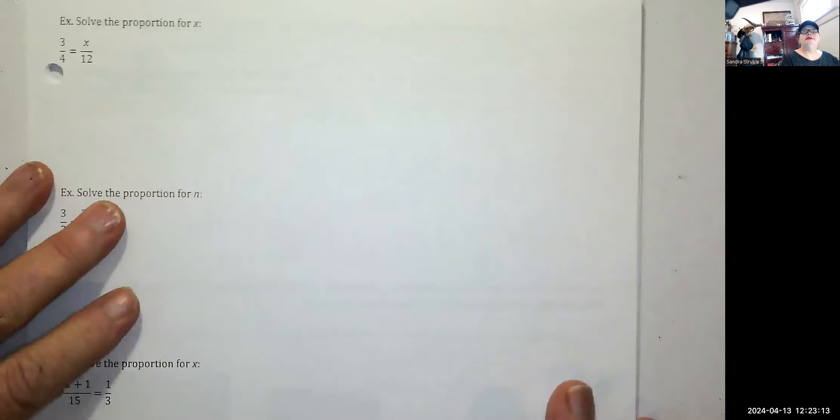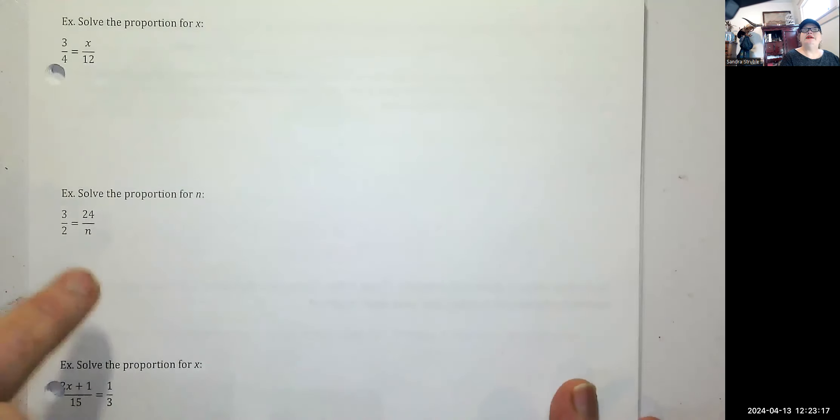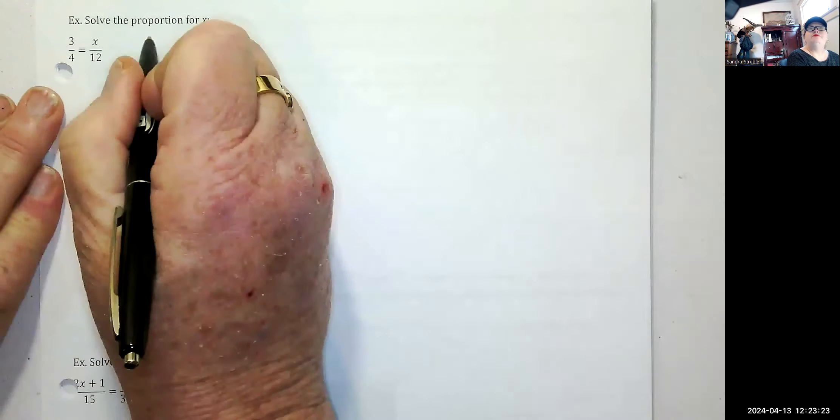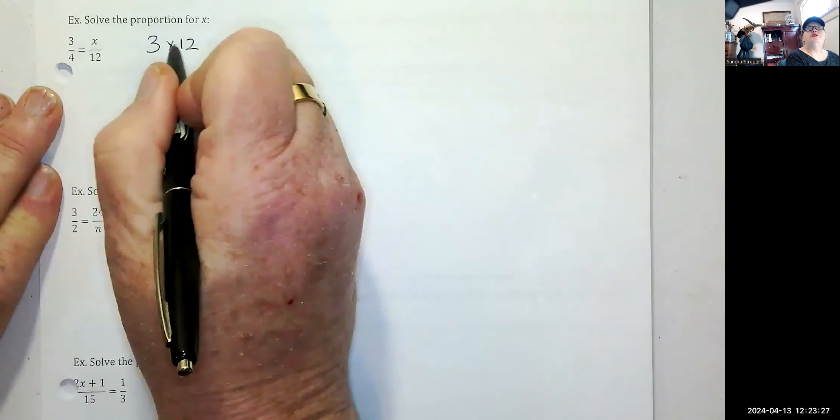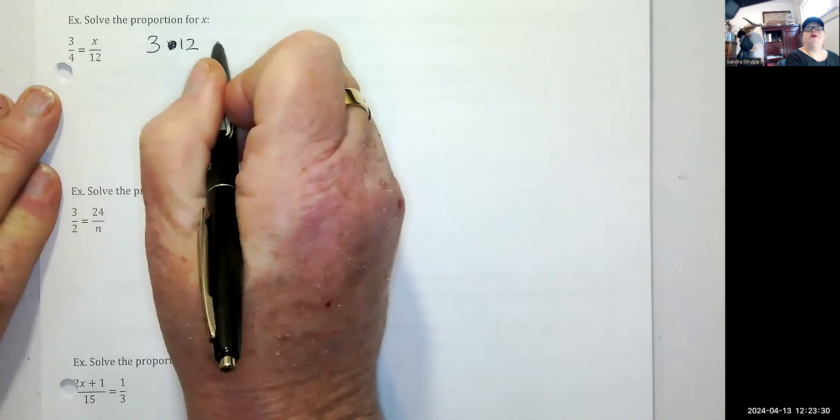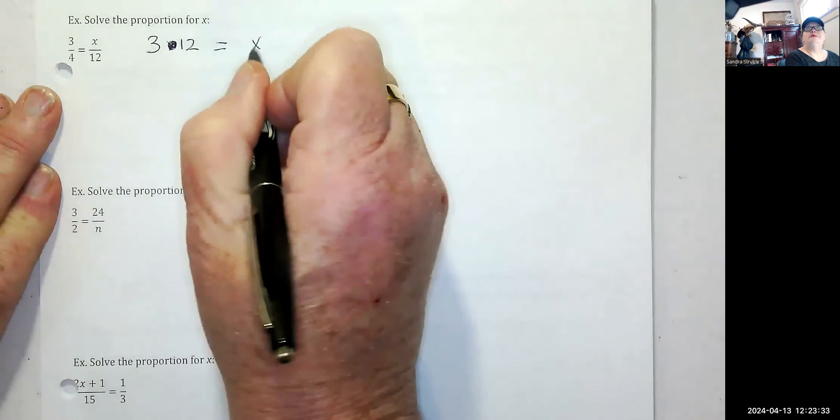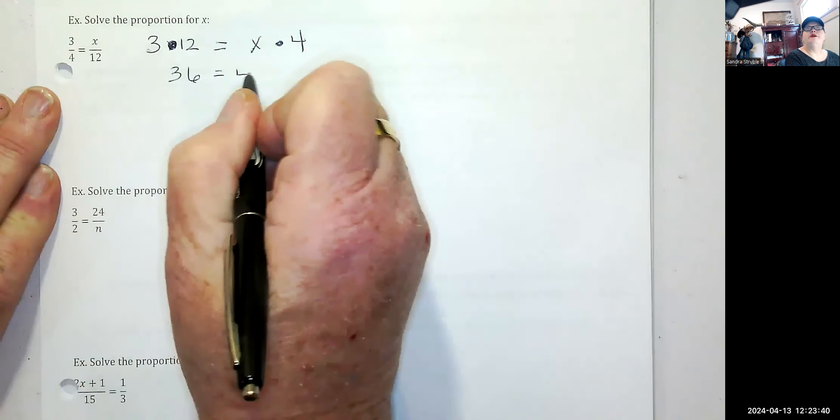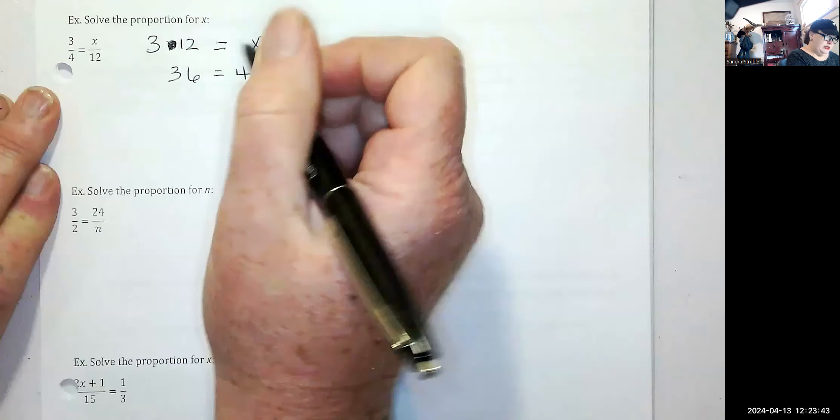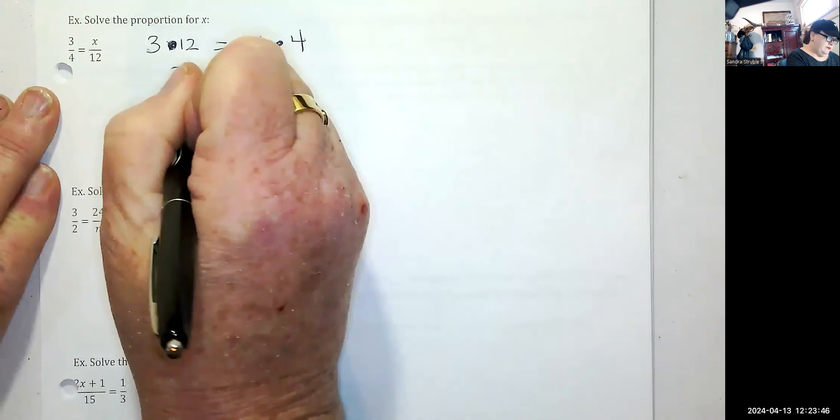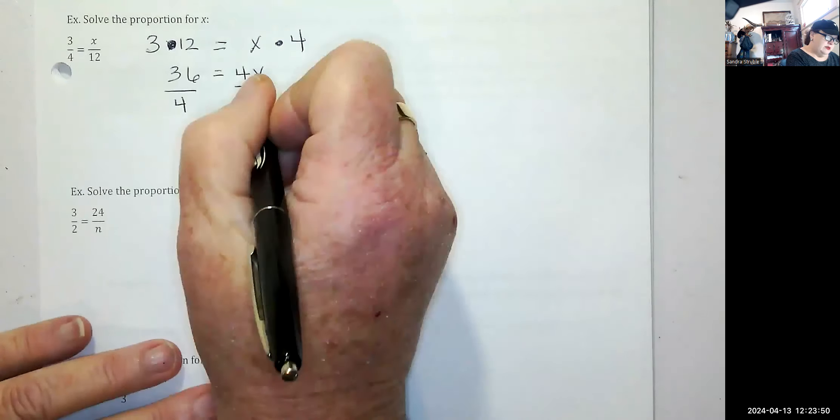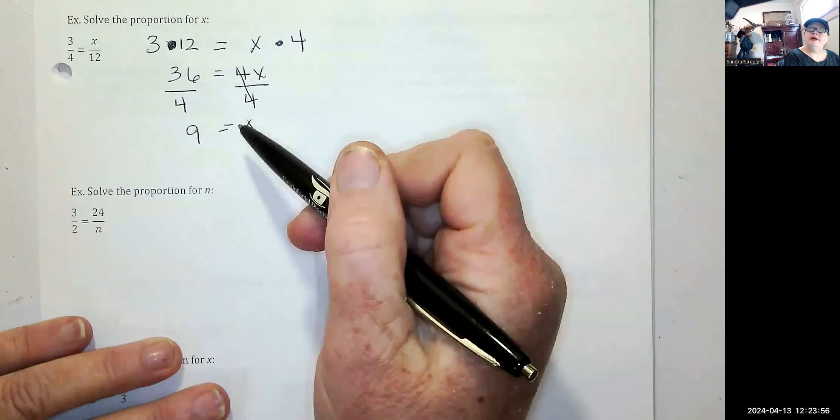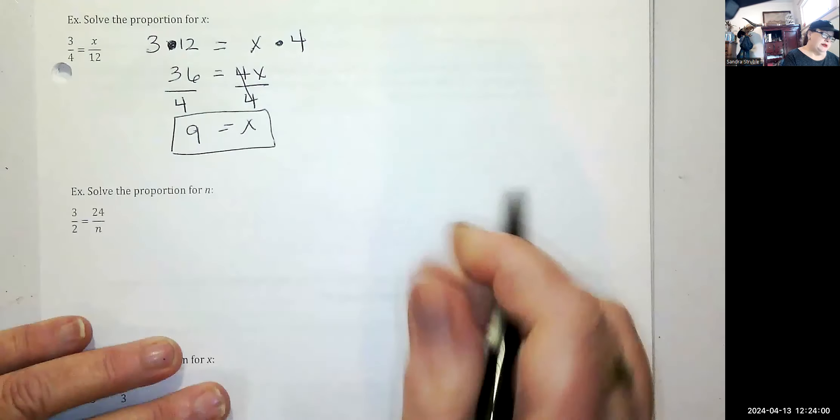Solve the proportion for X. I'm going to do this next one and then I want you to pause the video and at least attempt this next one yourself. So I'm going to set them up. Three times 12, this is the problem because we have an X here. So maybe I should just use the dot for multiplication. Is that equal to X times four? Three times 12 is 36 equal to four X. And then I just need to solve for X. Divide both sides by four. And X is equal to nine.